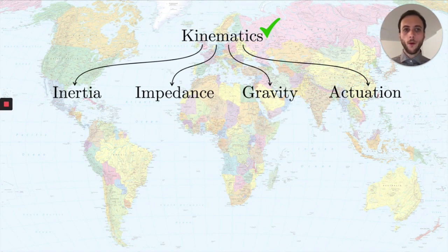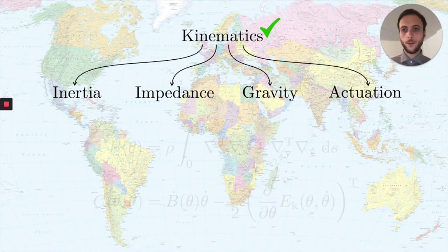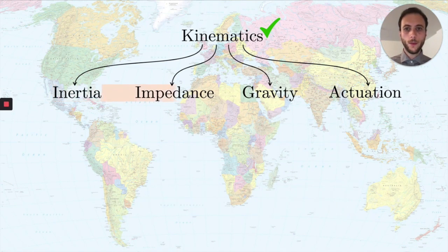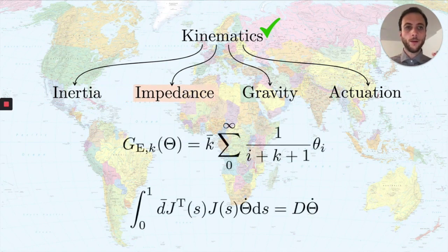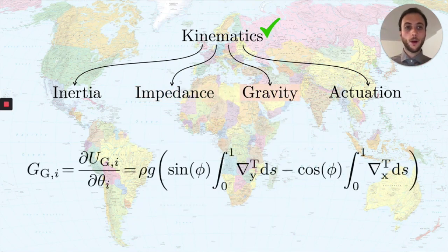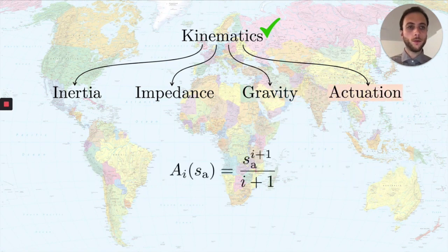In the paper we derive all the other terms needed for the dynamics. Let's just go very quick through them for the sake of time. Inertia is a general formulation of the inertia matrix and the Coriolis matrix. Impedance, we have the stiffness characteristic and the damping characteristics. We have then a characteristic of the gravity field and an actuation field.